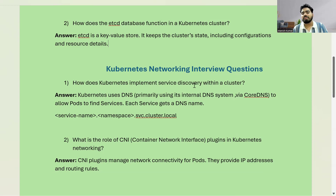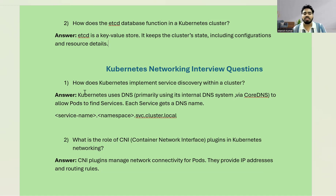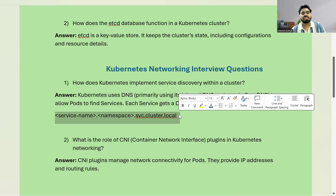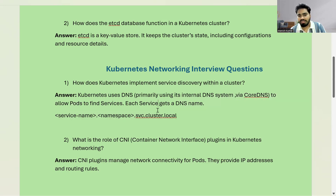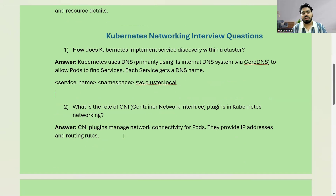Moving towards the networking interview questions: how does Kubernetes implement service discovery within a cluster? When we talk about service discovery, we are talking about communication between different services — from one pod to another pod. Kubernetes uses DNS primarily through its internal DNS system called CoreDNS, which allows pods to find services. The DNS format looks like: service-name.namespace.svc.cluster.local. This cluster IP DNS format allows communication from one service to another, meaning one pod to another pod.